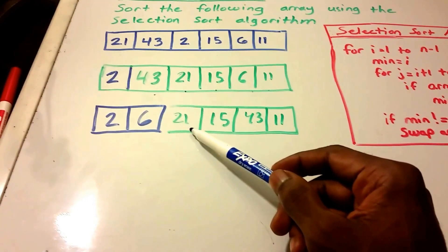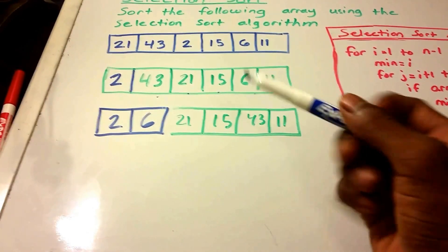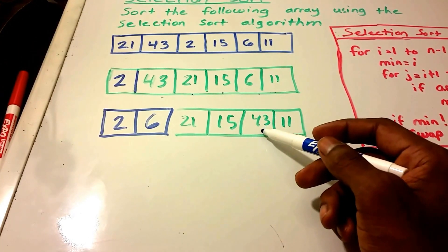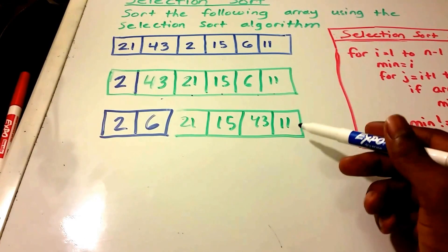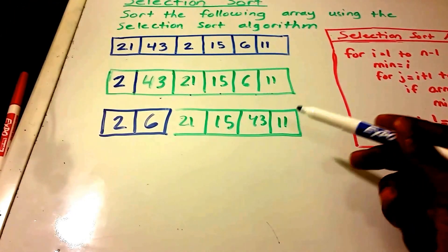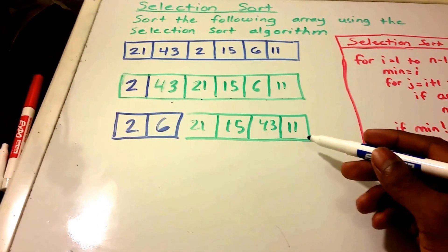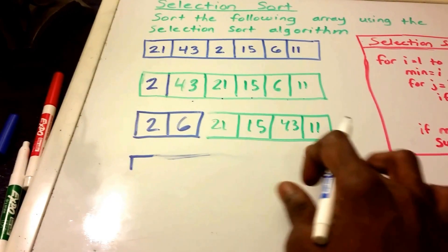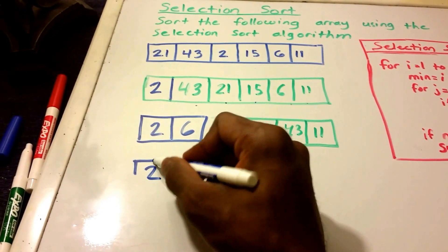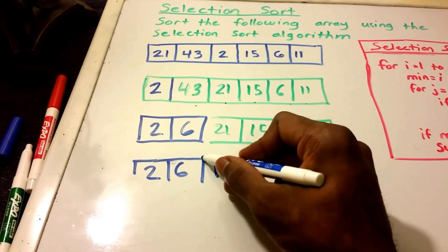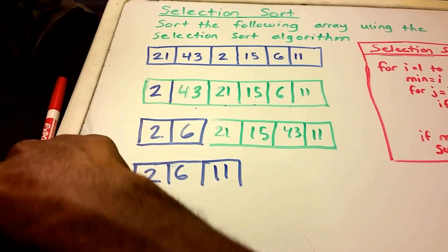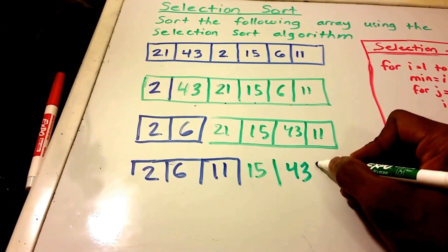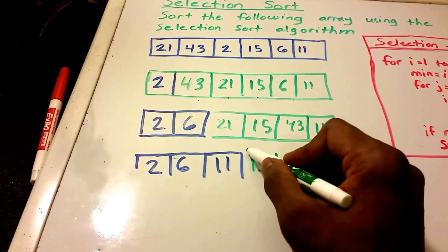So now we are here with the element 21. We check if 21 is less than 15. And it isn't. So our 15 is our new minimum element. We check to see if 15 is less than 43. And it is. So 15 is still our minimum element. And then we check if 11 is less than 15. And it is. So 11 is our new minimum element. So we swap 11 with 21. So now our array looks like this. And then we swap 11 with 21, this becomes 21 here.